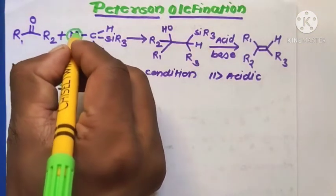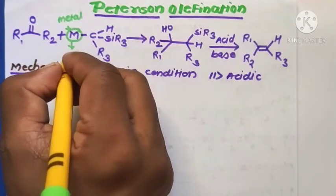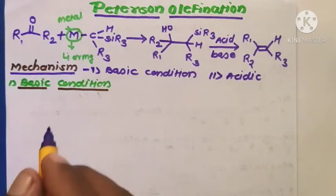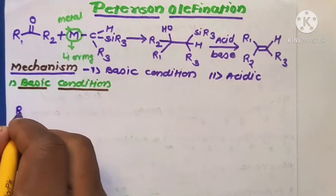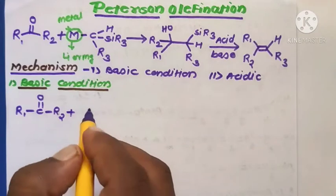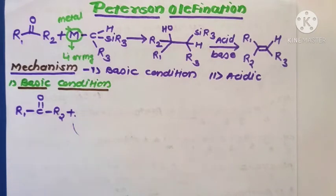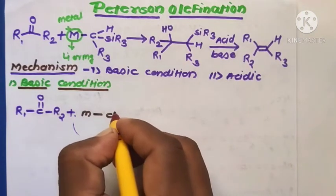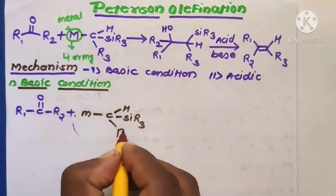Here, M is a metal — it may be lithium (Li) or magnesium (Mg). The carbonyl compound R1-C(=O)-R2 reacts in the presence of the alpha-silyl carbanion, where the metal M is bonded to the carbon bearing the Si(R3) group.